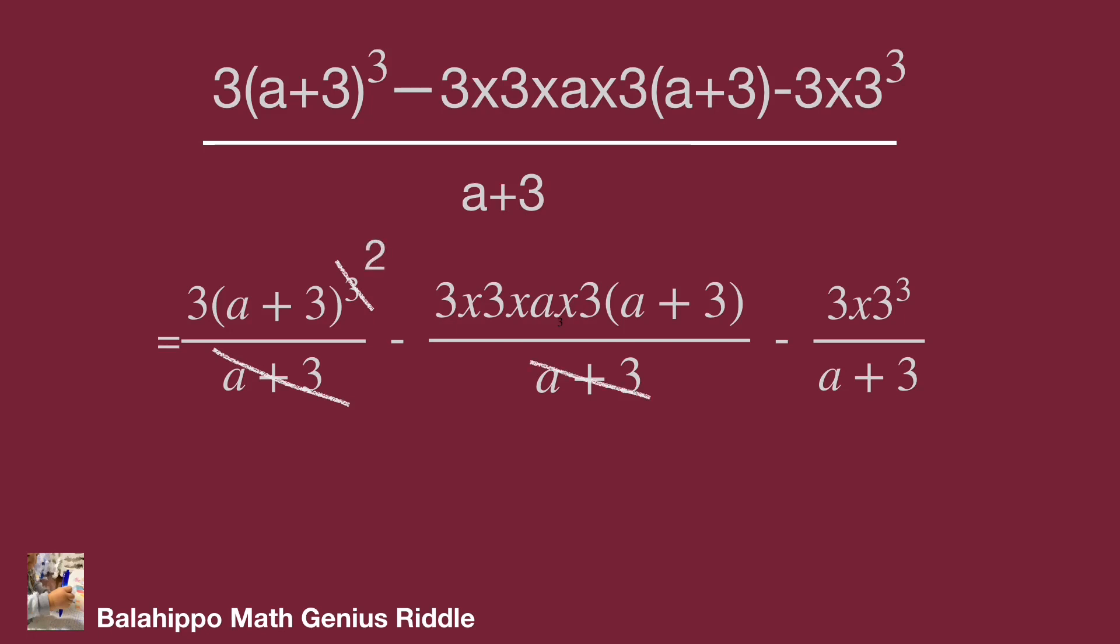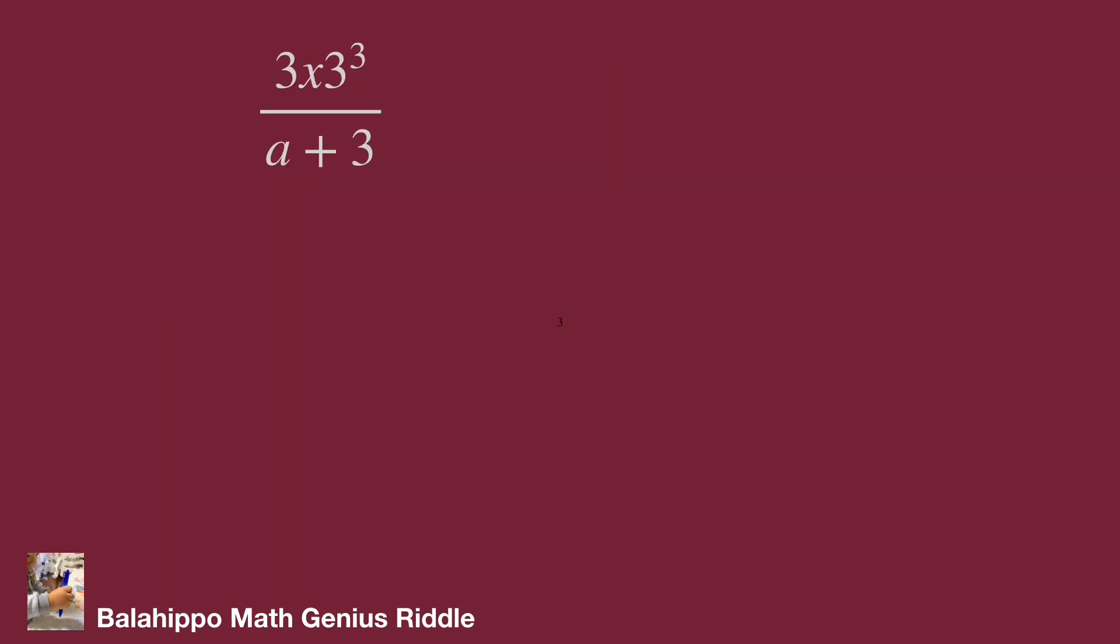Eliminate a+3 in numerator and denominator in the first and second fractions. We know that the first and second terms are all integers. Therefore, let's handle the third fraction. The fraction 3·3³ over a+3 equals 81 over a+3. It is an integer.